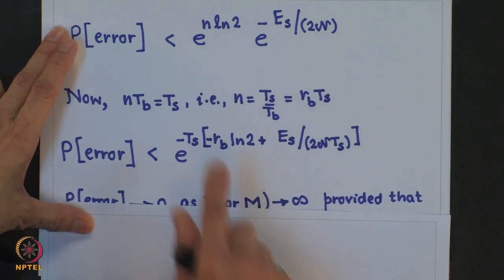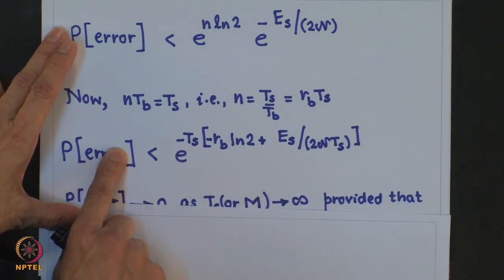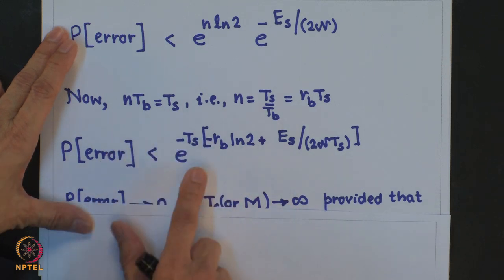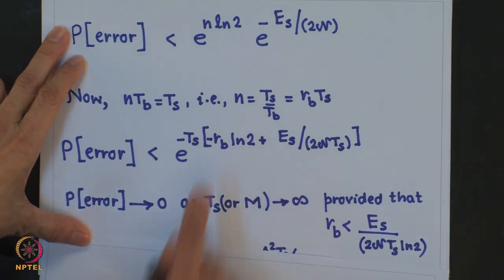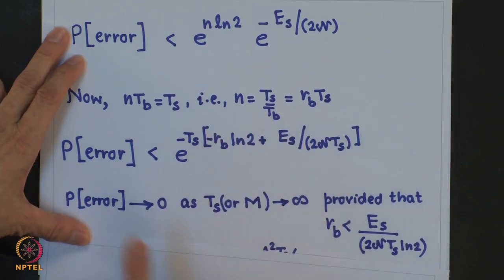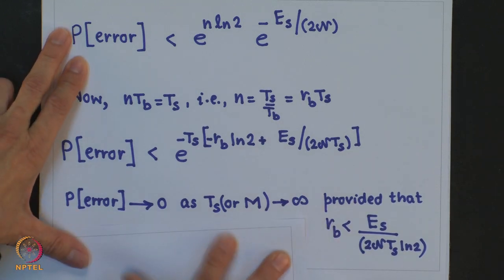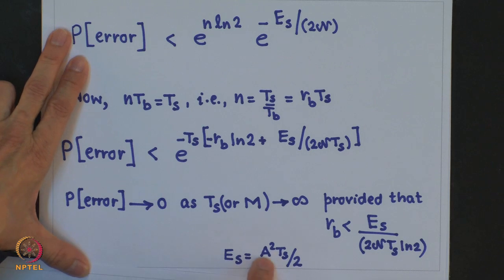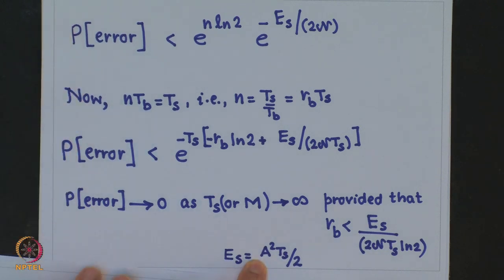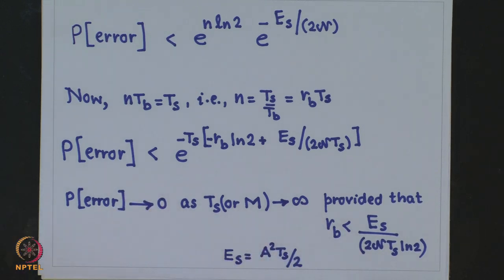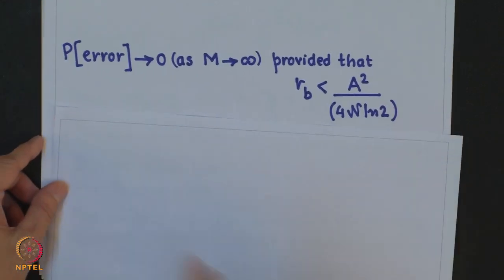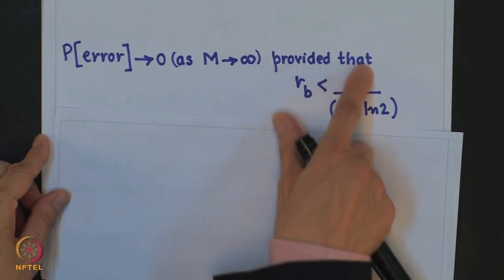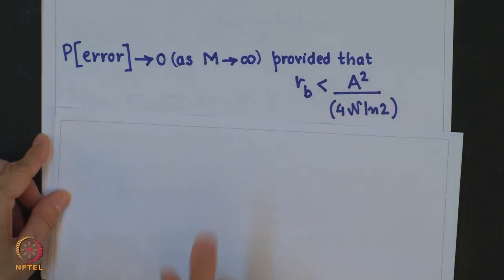This gives a different viewpoint: the probability of error will tend to 0 as M tends to infinity provided R_b is less than a certain threshold. Since the energy in the sinusoid is E_s = A²T_s/2, where A is the amplitude, we can rewrite the rate constraint in terms of the signal amplitude. Probability of error tends to 0 as M tends to infinity provided the bit rate R_b satisfies this constraint.